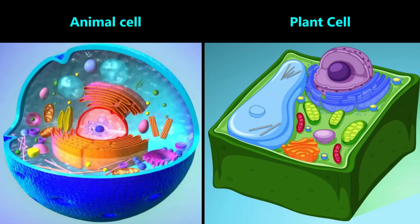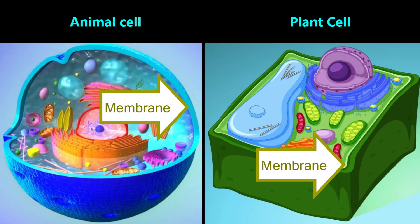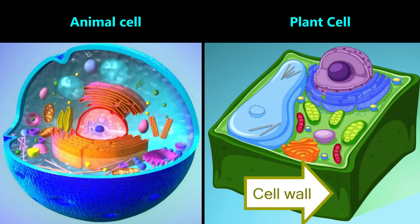These sketches show an animal cell on the left and a plant cell on the right. Both have a boundary which is like a thin bag called a membrane. The plant cell has an additional lining called the cell wall, which makes plant cells stiff and is one of the reasons why wood is so strong.